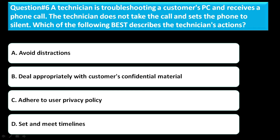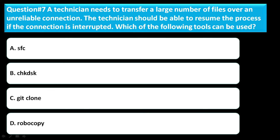Question number six: a technician is troubleshooting a customer's PC and receives a phone call. The technician does not take the call and sends the phone to silent. Which of the following best describes the technician's actions? Option A: avoid distractions. Option B: deal appropriately with customer's confidential material. Option C: adaptive to user privacy policy. Option D: set realistic timelines. The correct answer is option A — avoid distractions.